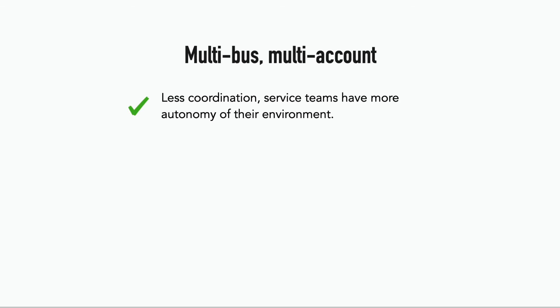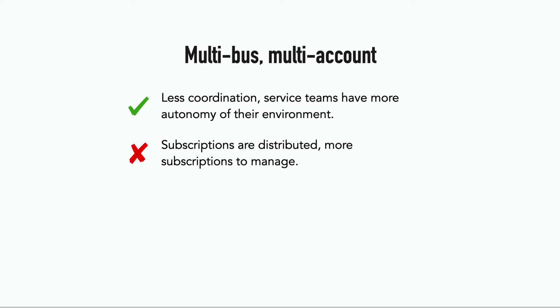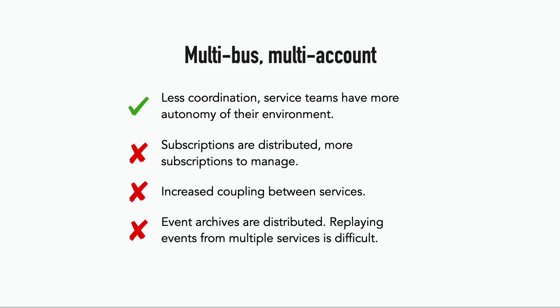The great thing about this approach is that there's less coordination between teams and service teams have more autonomy over their environment. But when they need to subscribe to events from other services, the subscriptions are now distributed and more complicated to deal with — you need to know which service and account has the event you need, then create a cross-account subscription for that event bus, for every service whose events you're interested in. This increases coupling between services and their respective teams. You can also end up with multiple event archives, making replaying events from multiple services very challenging. It does, however, work great with ephemeral environments.